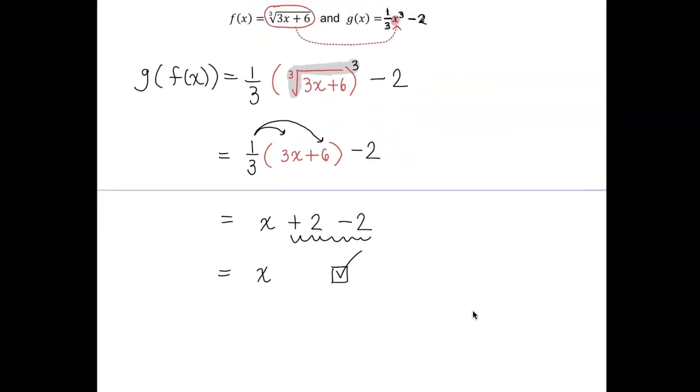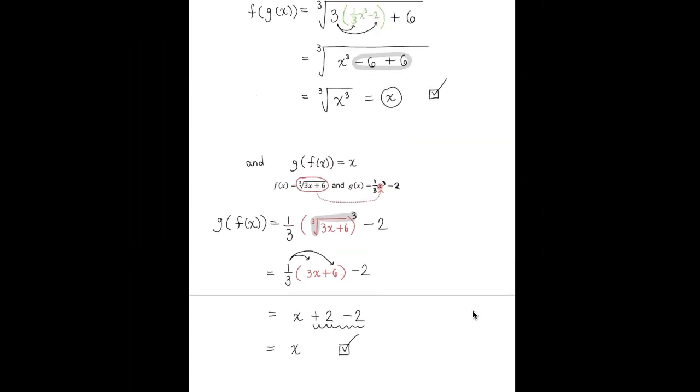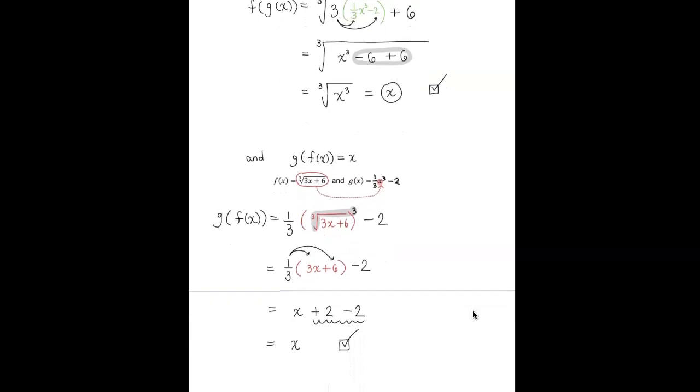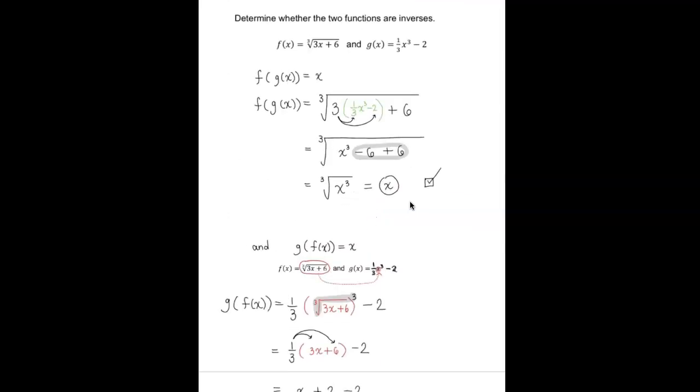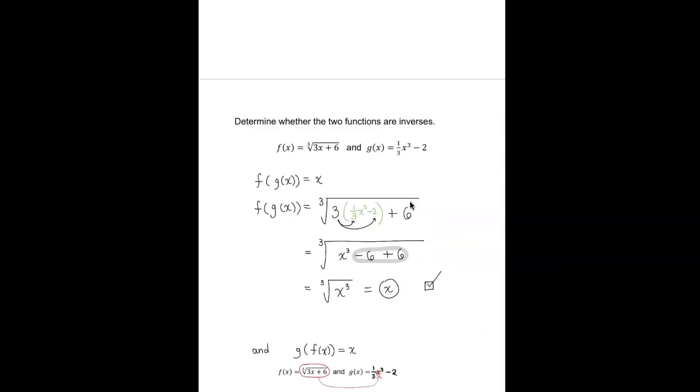So what's the only thing left? x. And again, that's what we want to see, right? When you are verifying inverses, we want to do a composition, do f of g of x and g of f of x, and if both comes out to be x, then we have enough evidence.